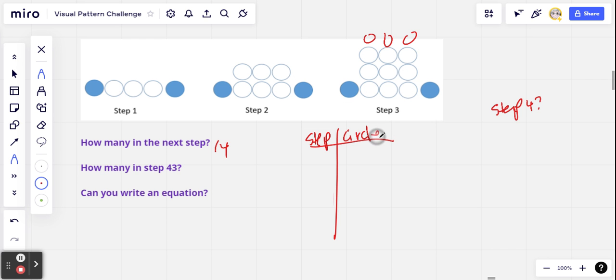So I'm going to make a chart here with the step number and the number of circles. And here in step 1 we've got 5, and in step 2 we've added 3 more, so that's 8. And in step 3 that's 11. And in step 4 we're saying 14.